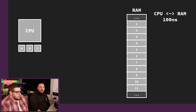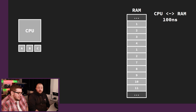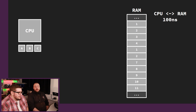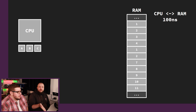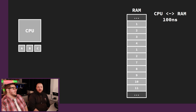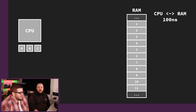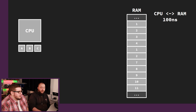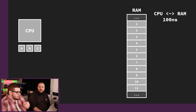So this takes about a hundred nanoseconds. That's forever — way too slow. A hundred nanoseconds is a long time. We can do a lot of stuff in a hundred nanoseconds. If a CPU cycle is not even a nanosecond, the CPU is sitting there for hundreds of nanoseconds not doing anything. So that's not great. So there's a fix to this.